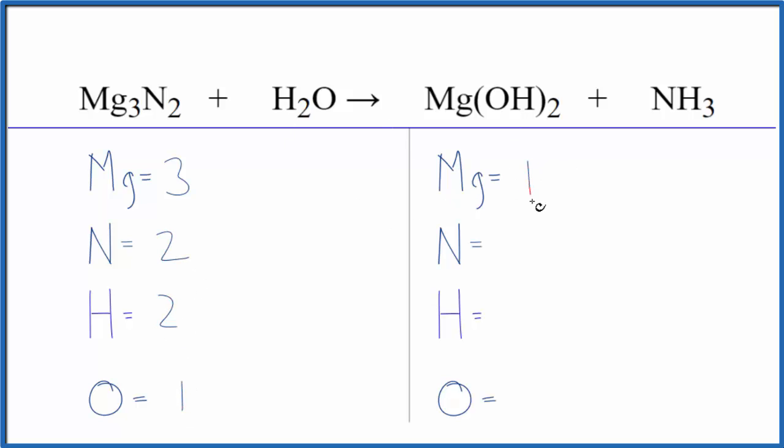In the products, we have one magnesium, then one nitrogen, and then be careful with the hydrogens. This two applies to everything. So we have two times one, two hydrogens, plus these three hydrogens here. So five hydrogens.